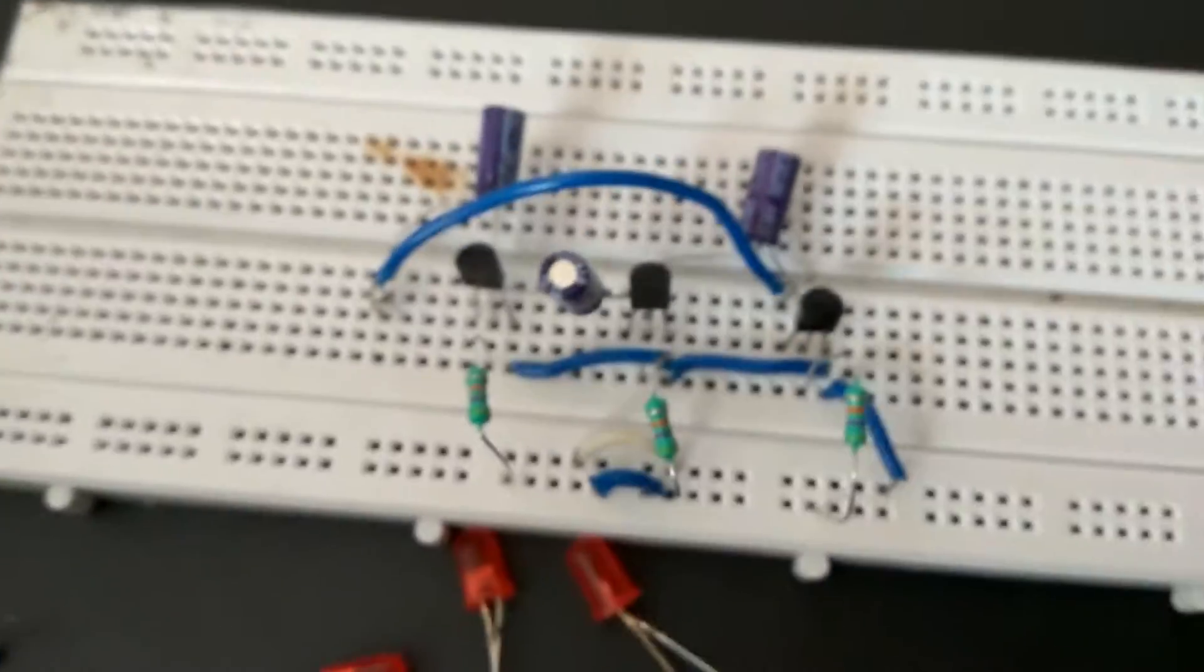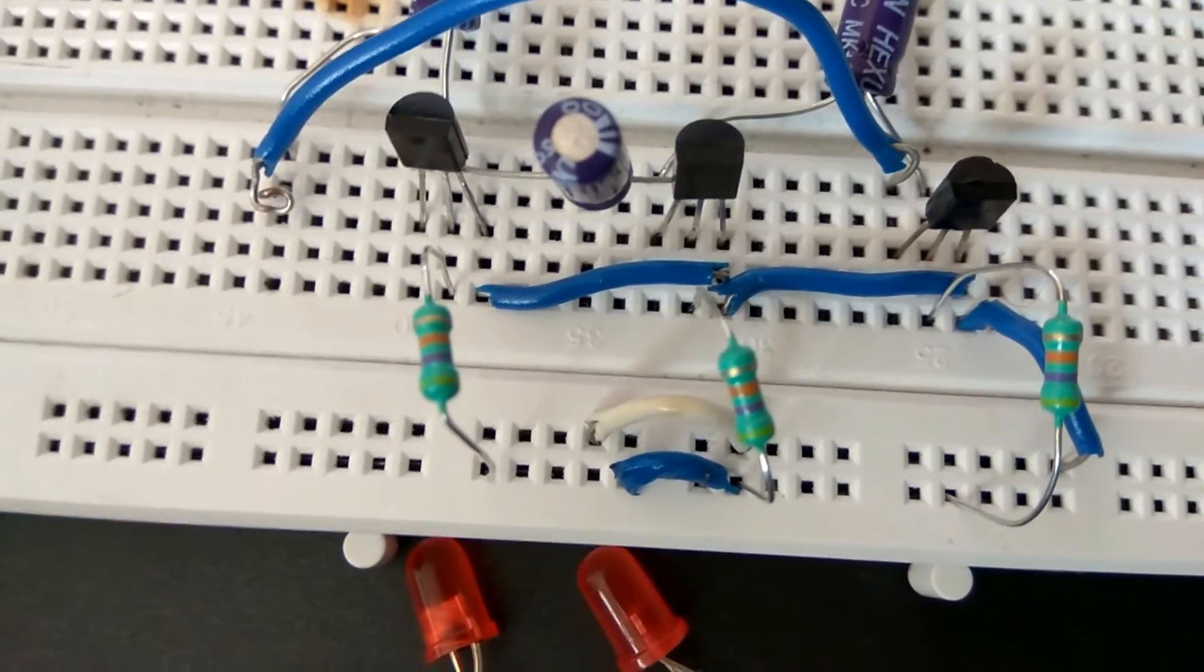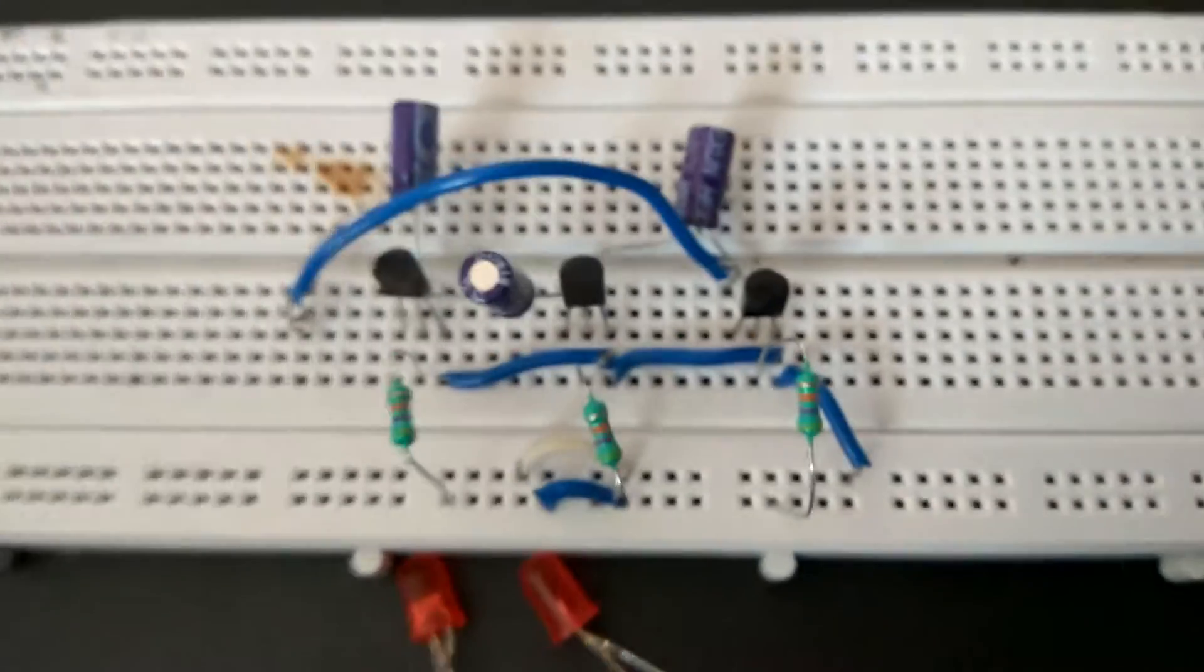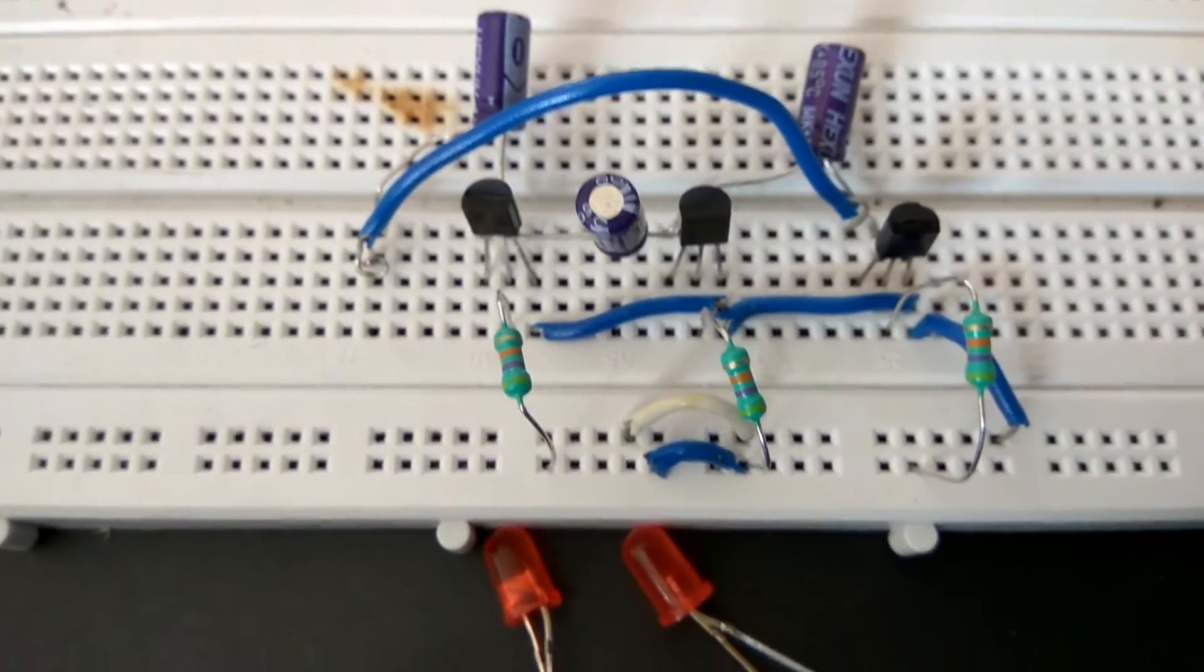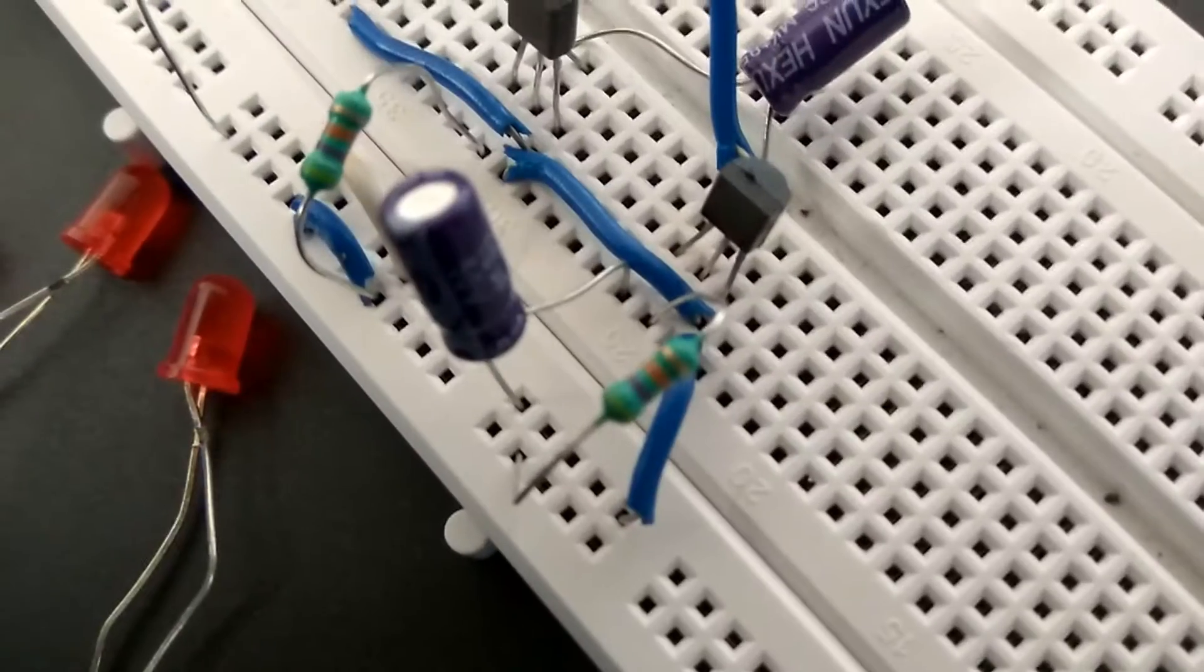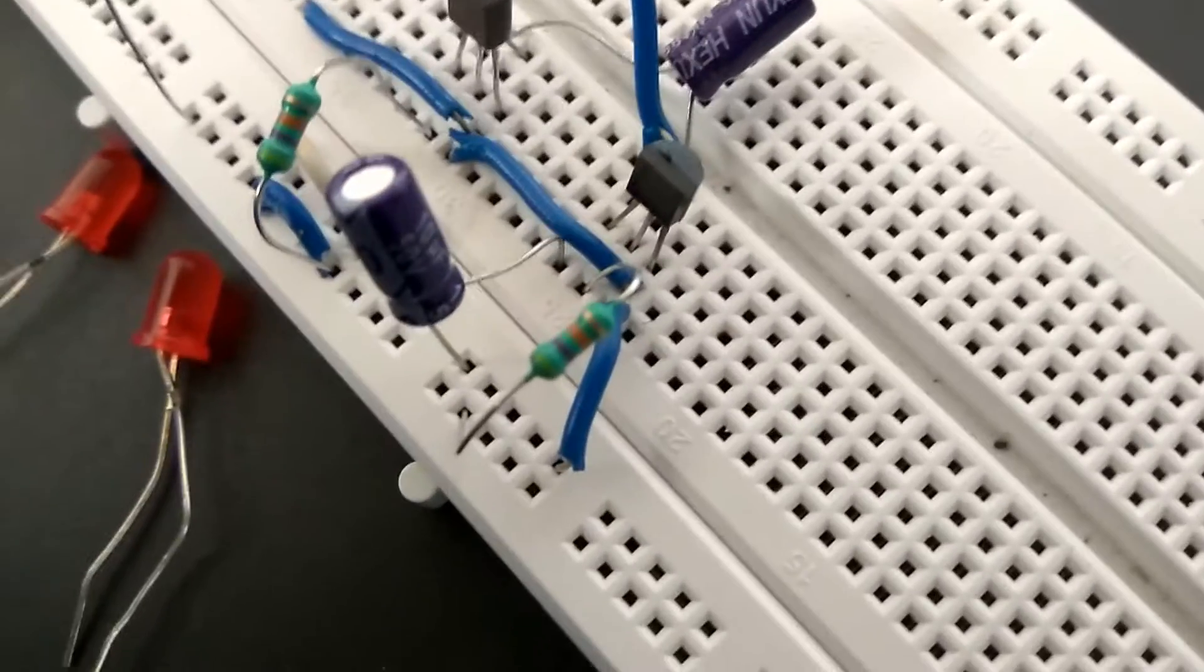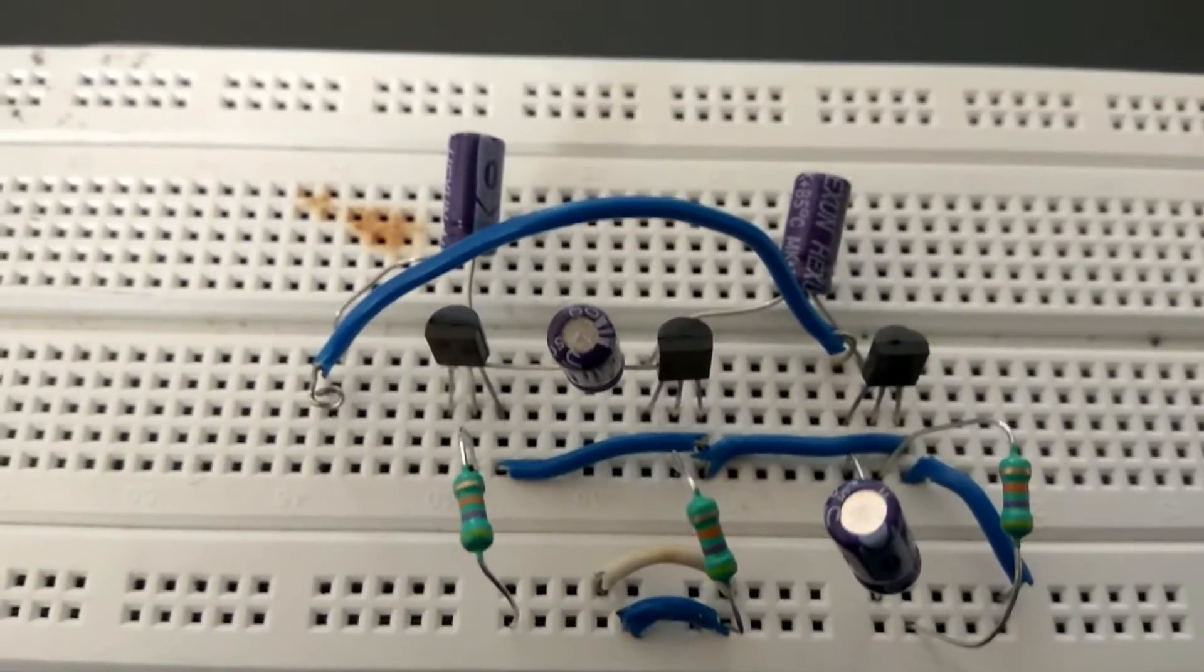Now take your fourth capacitor. Connect its negative terminal to ground and its positive terminal to the collector of the third transistor. Positive terminal to the collector, negative terminal to ground.